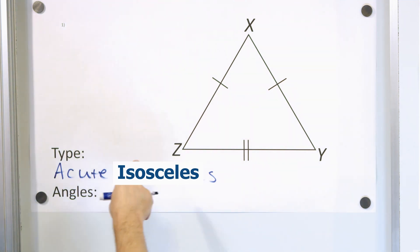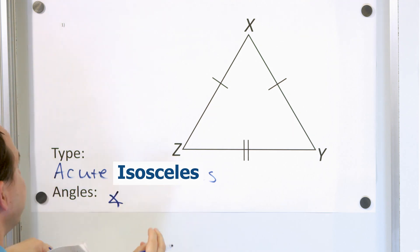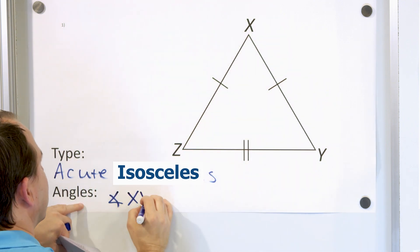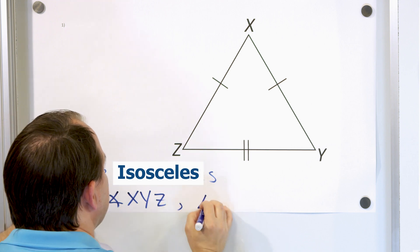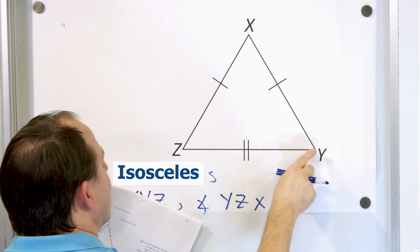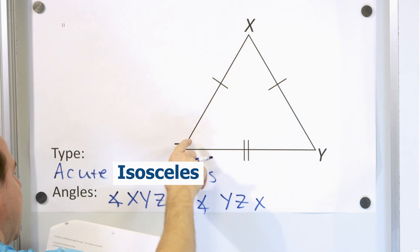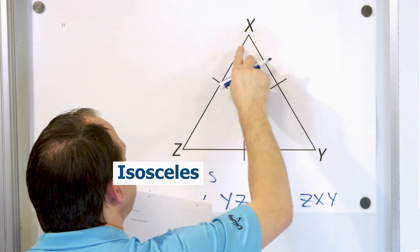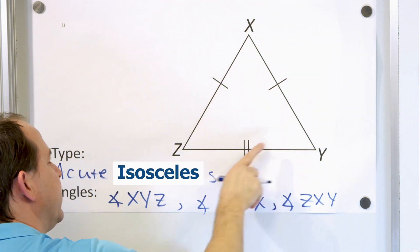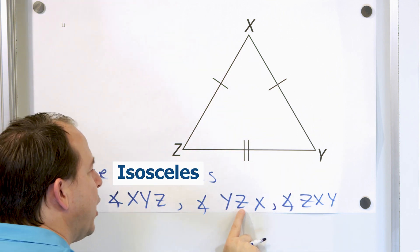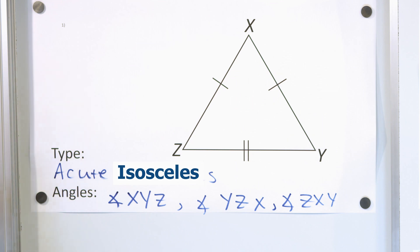Next, name all of the angles. The angles are listed with vertices X, Y, Z. Angle XYZ is this angle, angle YZX is this angle, and angle ZXY is that angle. Notice the middle letter is always the vertex — the pointy part — of each angle.